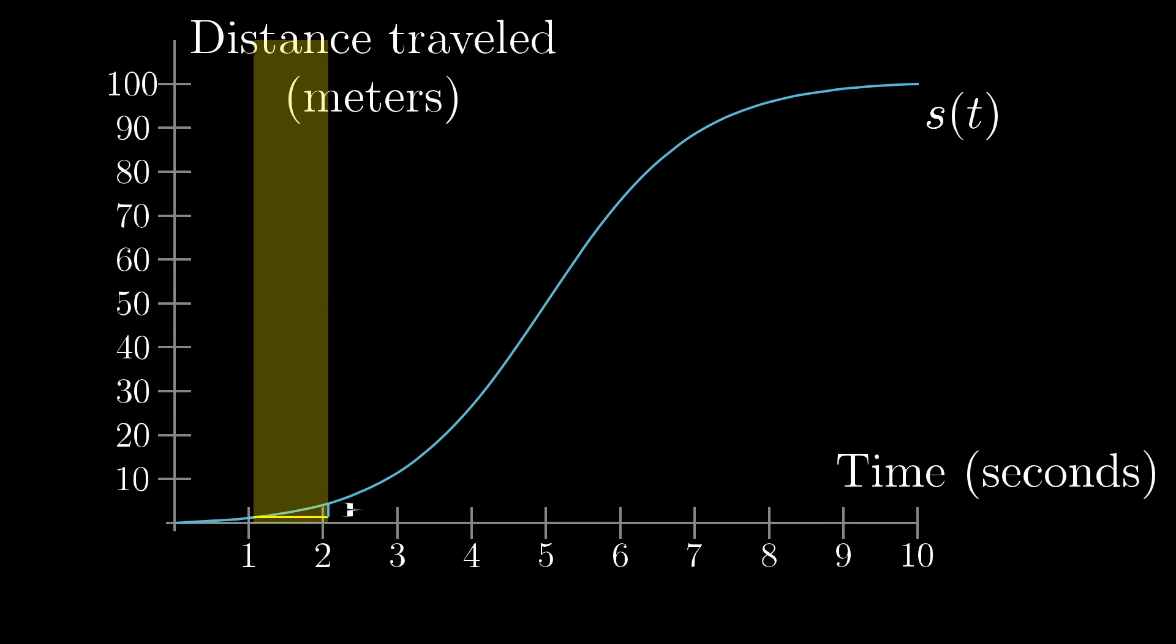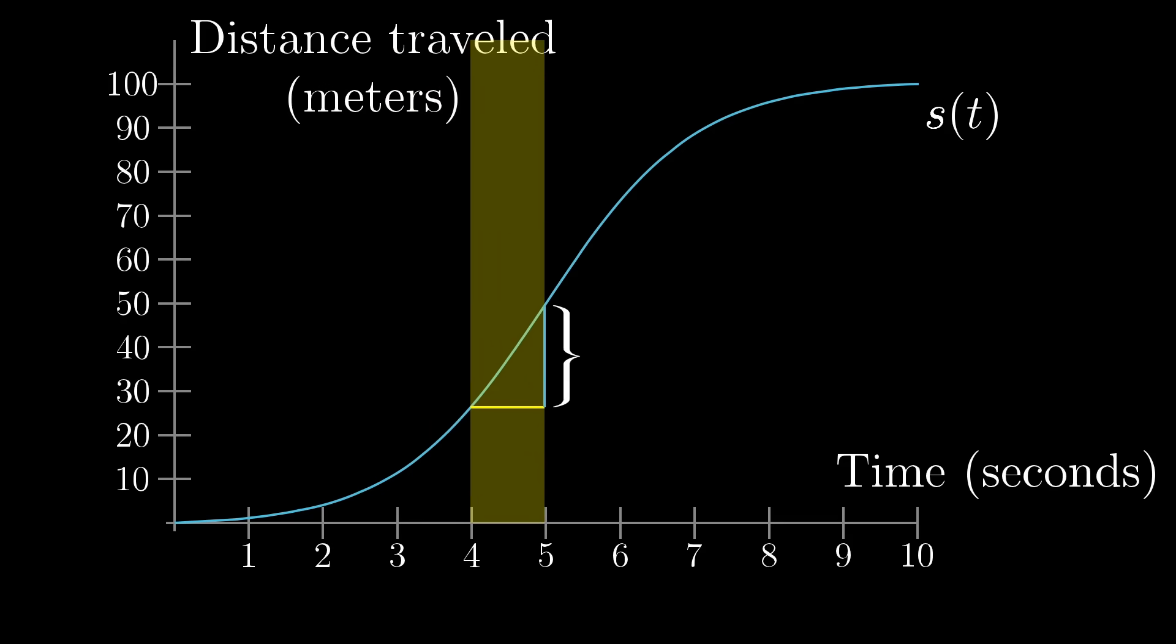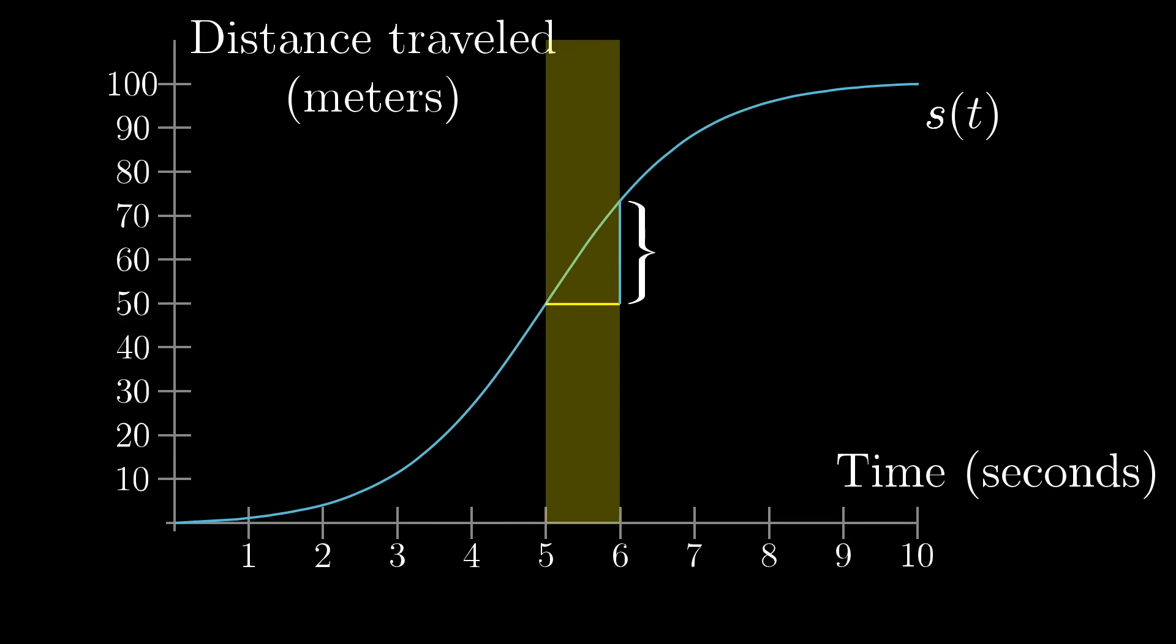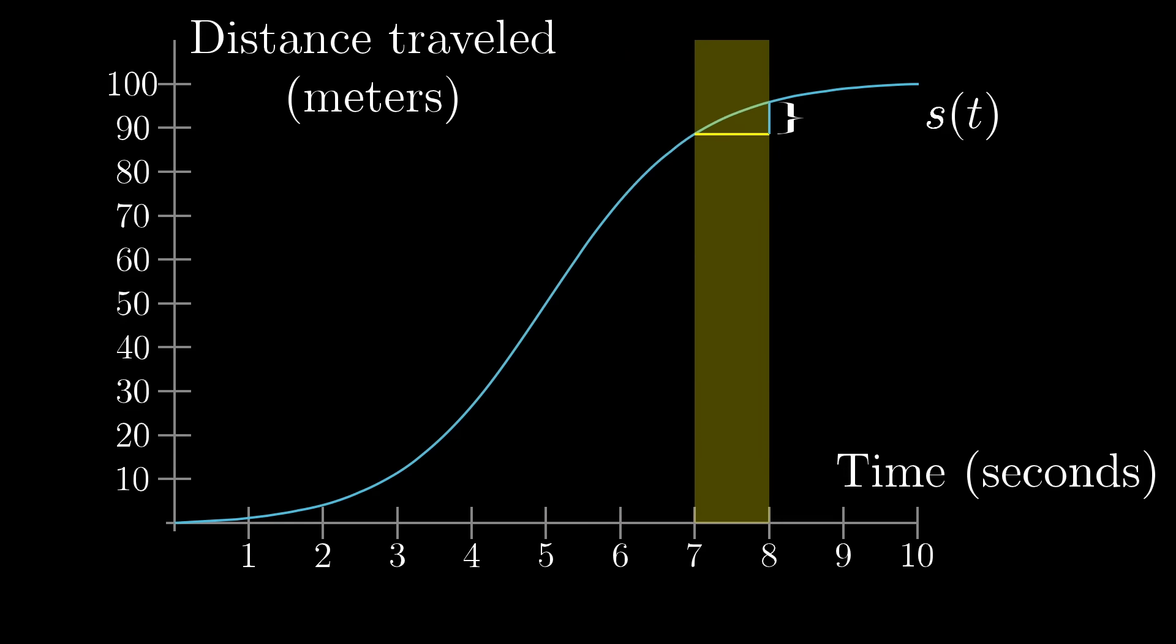Then for the next few seconds, as the car speeds up, the distance traveled in a given second gets larger, which corresponds to a steeper slope in this graph. And then towards the end, when it slows down, that curve shallows out again.